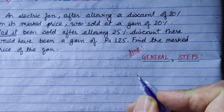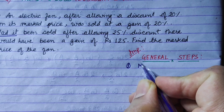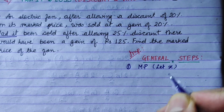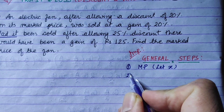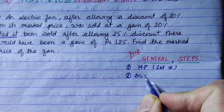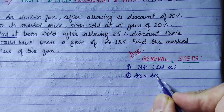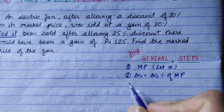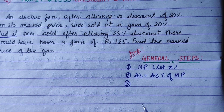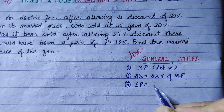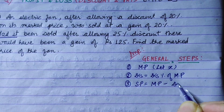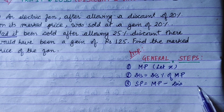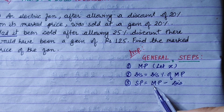The mark price discount will be equal to the first step. We start with mark price — let mark price be x. Discount equals discount percent of MP. Selling price equals mark price minus discount, which is MP minus discount percent of MP.